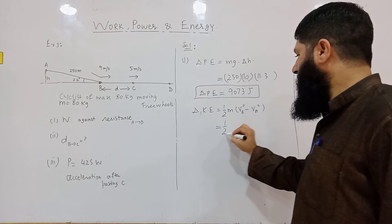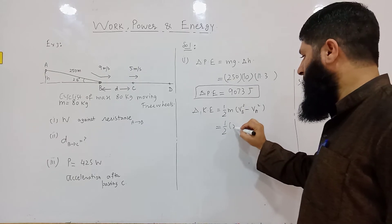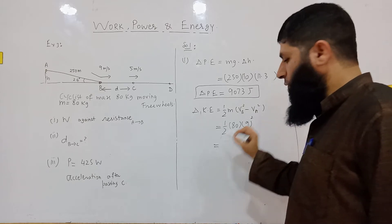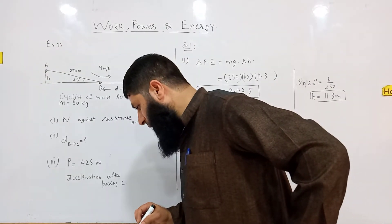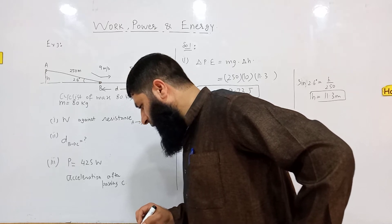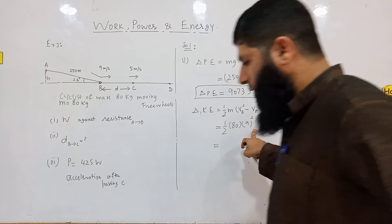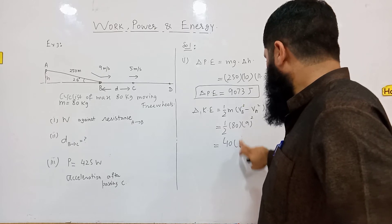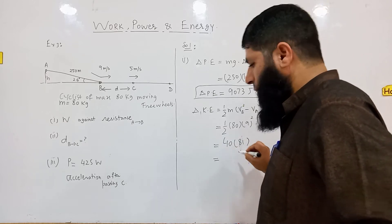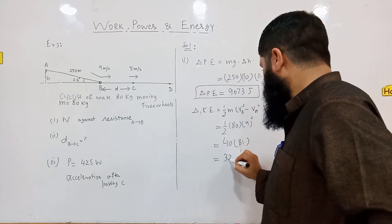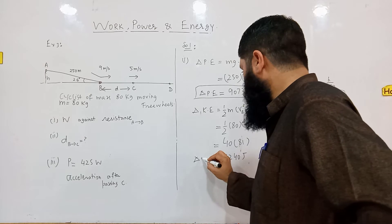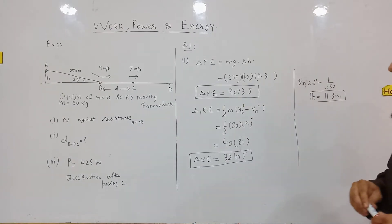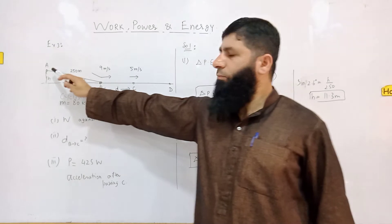Since the cyclist started from rest at point A, the velocity at A is zero. Using ½mv², with mass equal to 80 and velocity at B equal to 9 m/s: the gain in kinetic energy equals ½ × 80 × 9² = 3240 Joules.